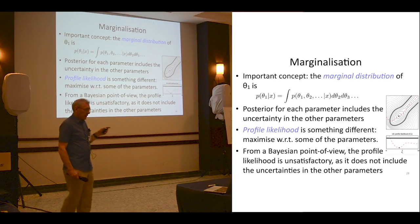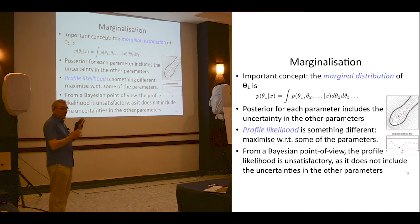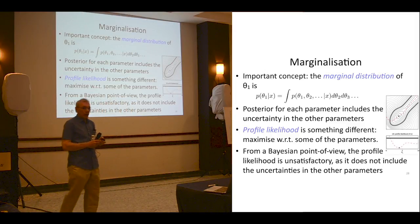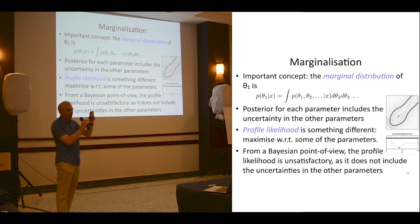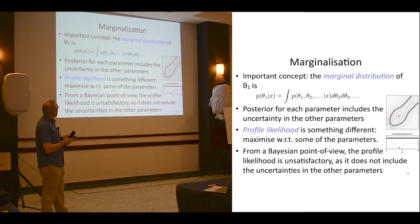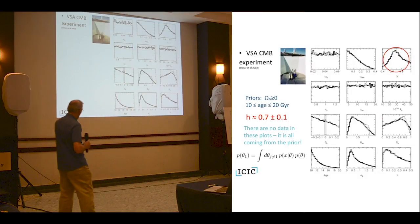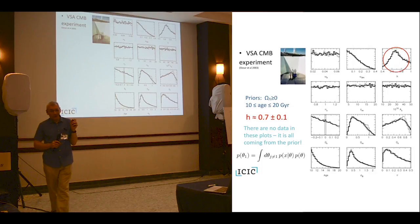We'll talk a little more in due course about marginalization. If we're inferring many different parameters, as we typically do in cosmology, and you want to know the distribution of just one parameter, then you marginalize over the other ones by integrating over all the other parameters. I'm going to skip some details here as we're running a little out of time.